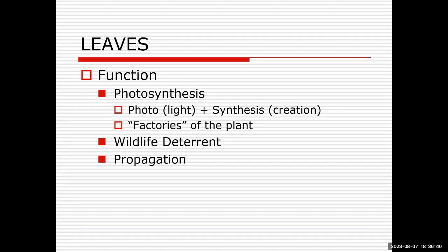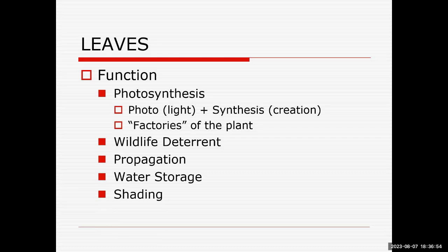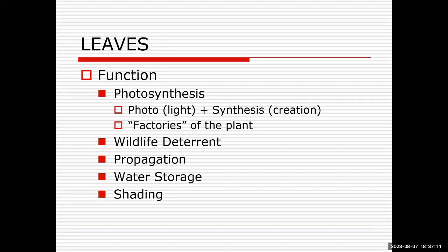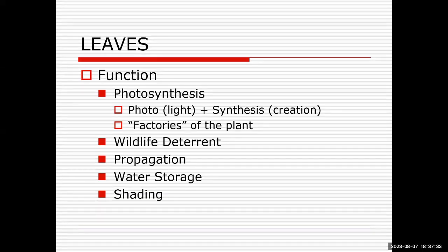Leaves are also the site of transpiration. Succulent leaves can store water as well. Another function we don't often think about is shading — leaves keep the rest of the plant or the leaves underneath it cooler by producing shade. You can see this with cottonwood trees: the top edges of leaves at the very top of the canopy look bad, but as you go further into the canopy you see much greener, better-looking leaves because those upper leaves provide shade for the interior canopy.